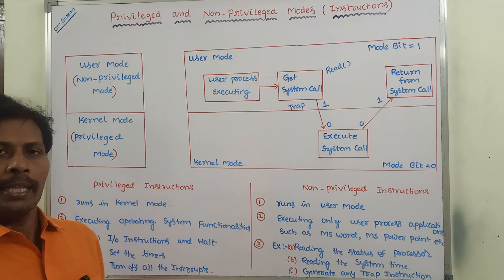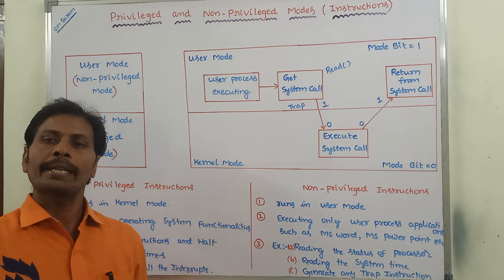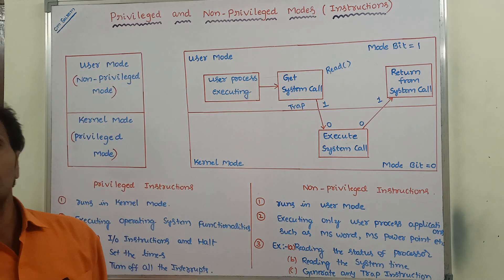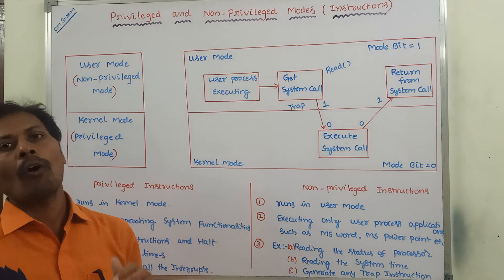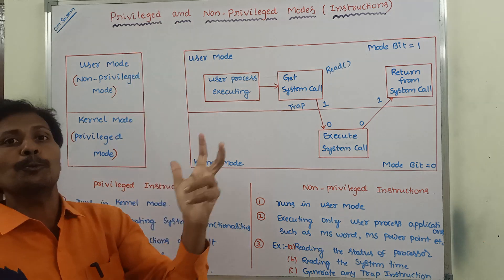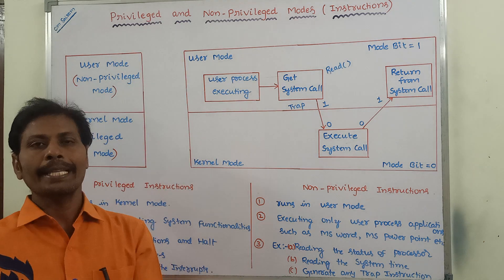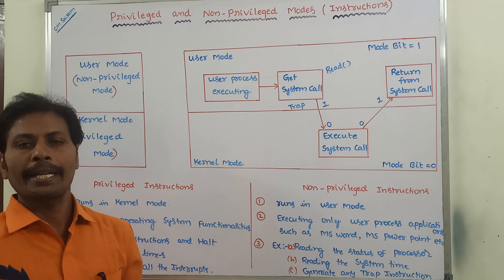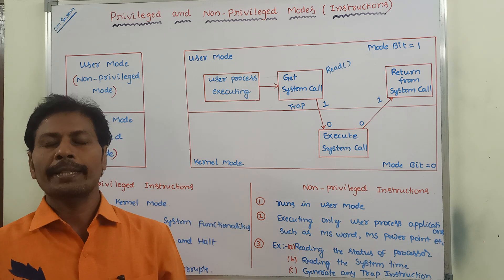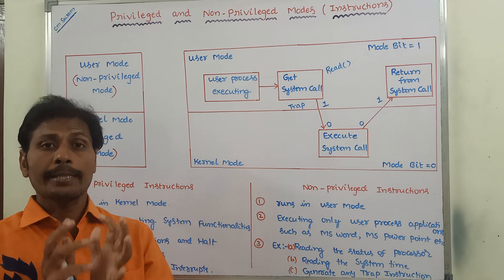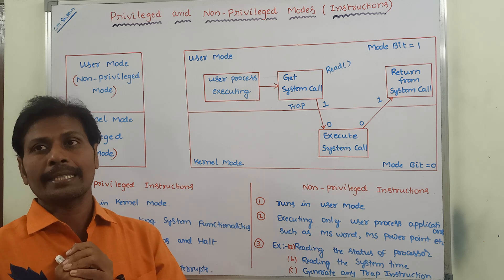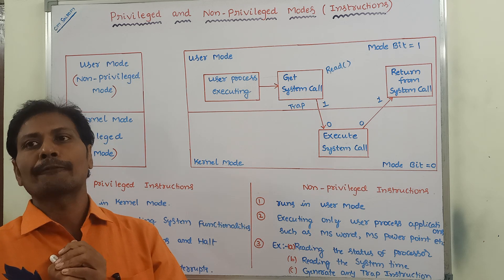Generally, a system can be operated in two modes. The first one can be called as privileged mode and the second one can be called as non-privileged mode. Because of these two modes, we can say that a system can be operated in dual mode. Why? For security purposes, unauthorized persons cannot access information from that system.